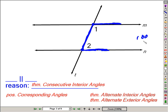So again, if angle 1 and angle 2 are supplementary, are the lines parallel and why? Your answer, yes, M is parallel to N, and the reason is consecutive interior angles. Again, they kind of form a C-like shape.